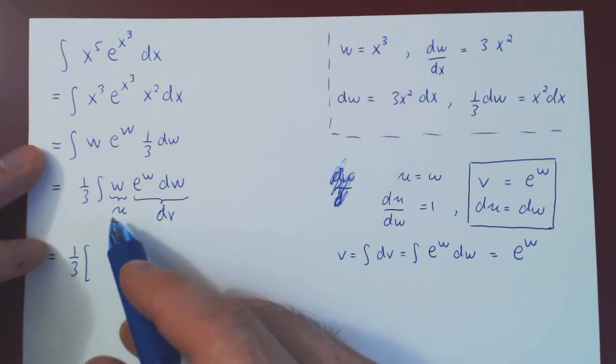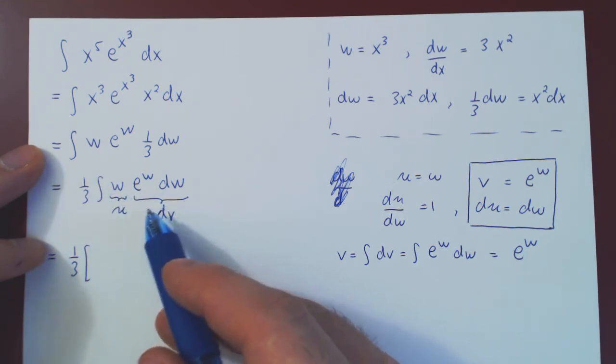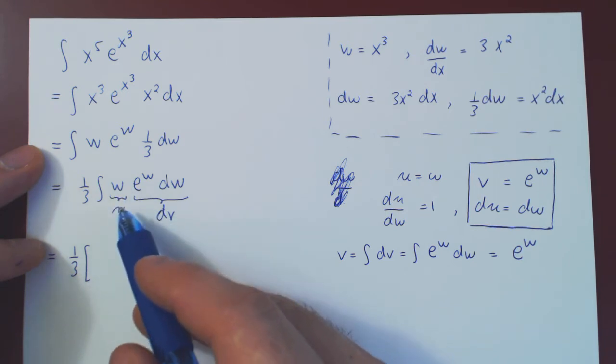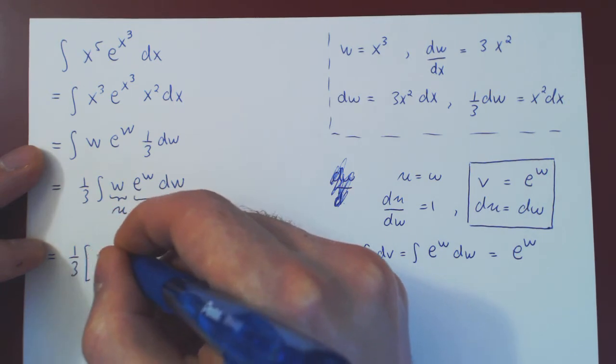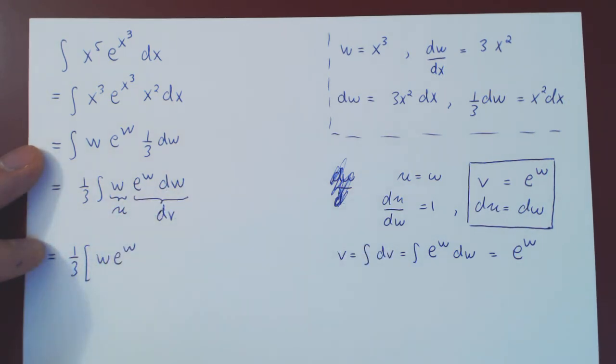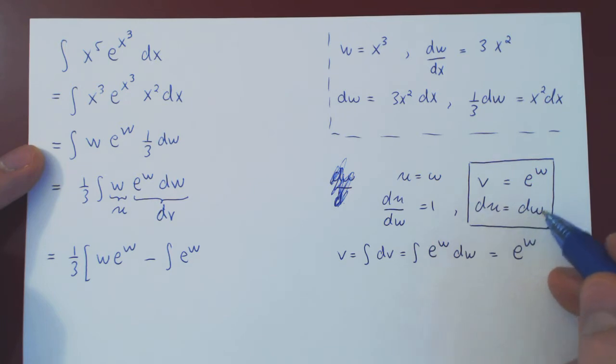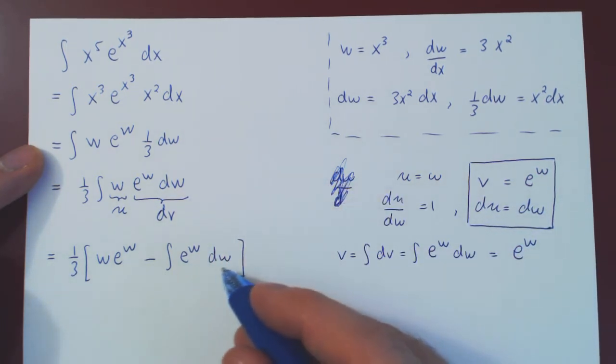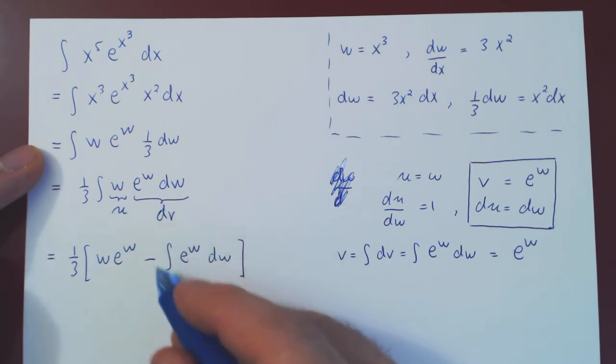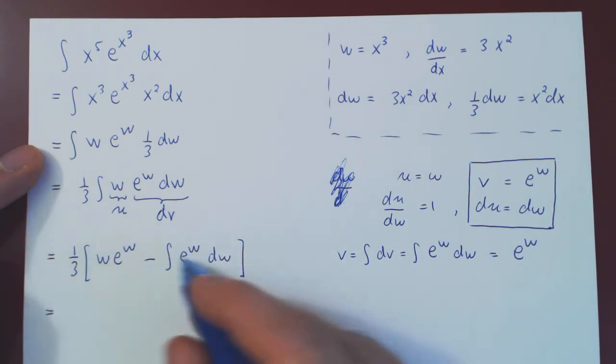So, by integration by parts now, the integral of u dv is uv. So, w times e to the w, minus the integral of v du, which is dw. As you can see now, we have a trivial integral, as this integrates to e to the w. So, we are essentially done.